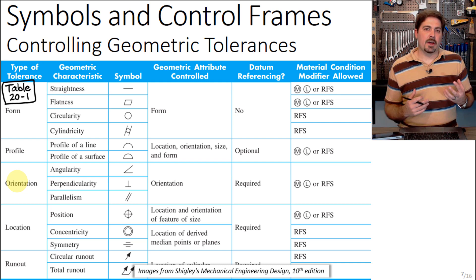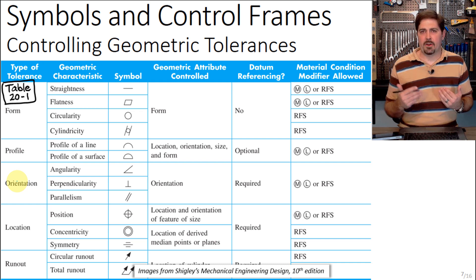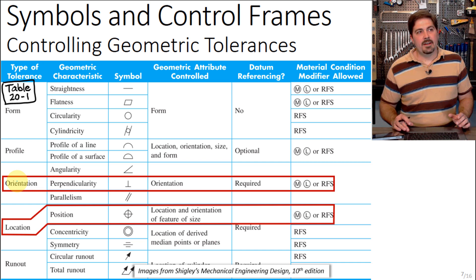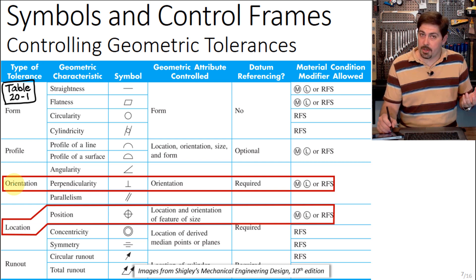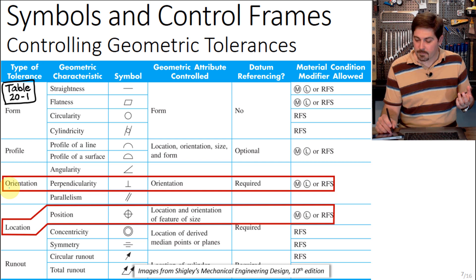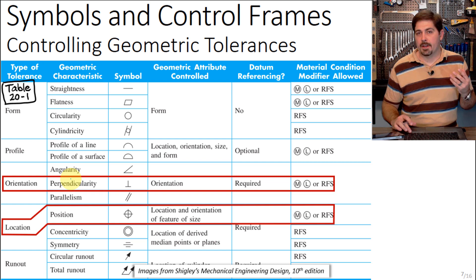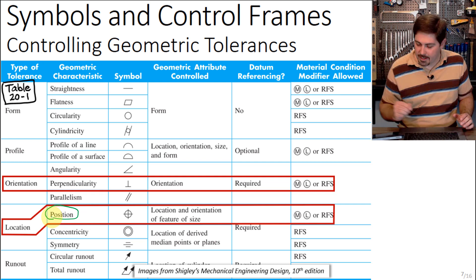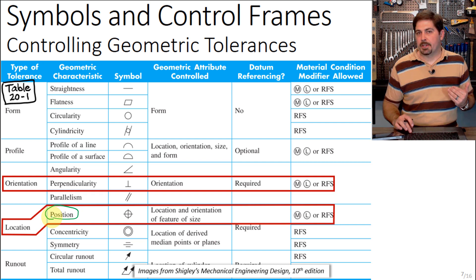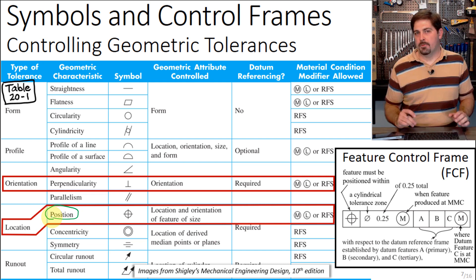Let's go back to the table of geometric controls that are part of the GD&T standard, which we saw in the first lecture. There are two controls I pointed out on that last slide — the main one we're looking at today is location, and I was also showing that orientation control of perpendicularity was coming in on that last example. So let's look more specifically at the position control.